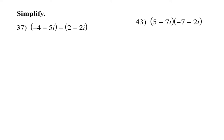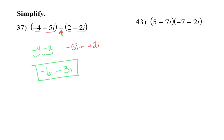Addition and subtraction of complex numbers is simple: combine like terms. Combine the real portions and combine the imaginary portions. For this first one, combine the real parts: −4 − 2 = −6. Then combine the imaginary parts: −5i − (−2i) = −5i + 2i = −3i. The answer is −6 − 3i.